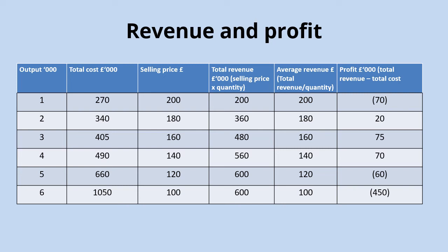Moving on to how a business generates revenue from its sales and makes its profit — I have a similar table with units of output increasing down the rows, keeping the total cost column since it's needed to calculate profit. In terms of sales, we're interested in how much the business is selling each individual unit for. You can see on the table that as units of output increase, the selling price goes down, because in order to sell more output a business needs to reduce its price to incentivize more customers to purchase.